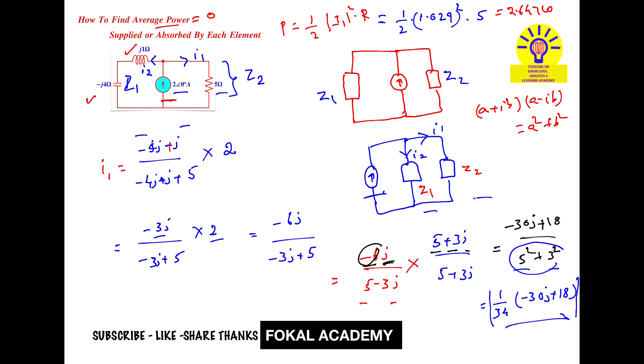Now what is the power supplied by the source? This is power absorbed by the resistor. So power supplied by the source equals power absorbed by capacitor plus power absorbed by inductor plus power absorbed by resistor. The average power in capacitor and inductor is zero, so 0 plus 0 plus the power absorbed in the resistor is 2.647. So the source supplies 2.647 watts.